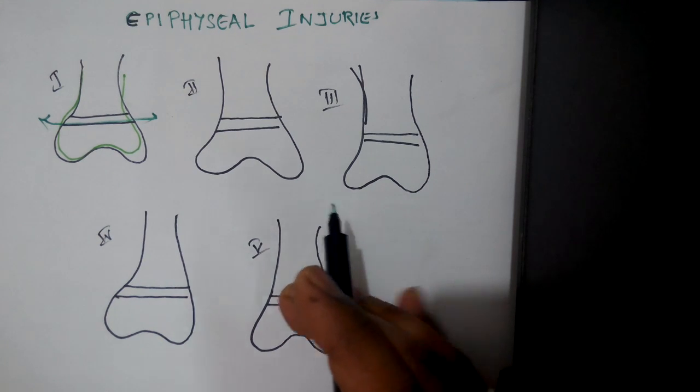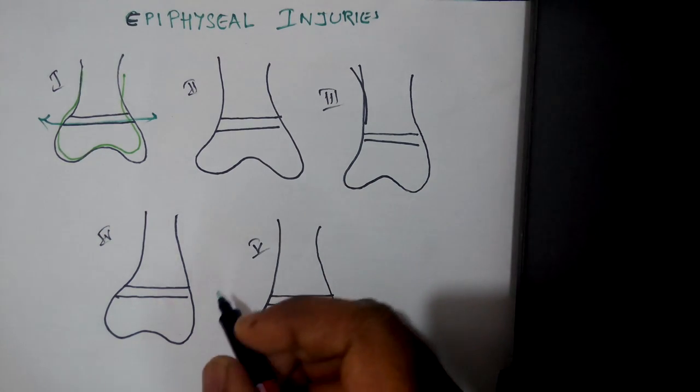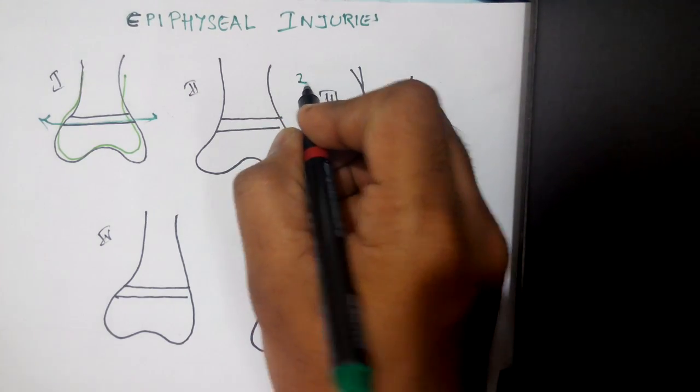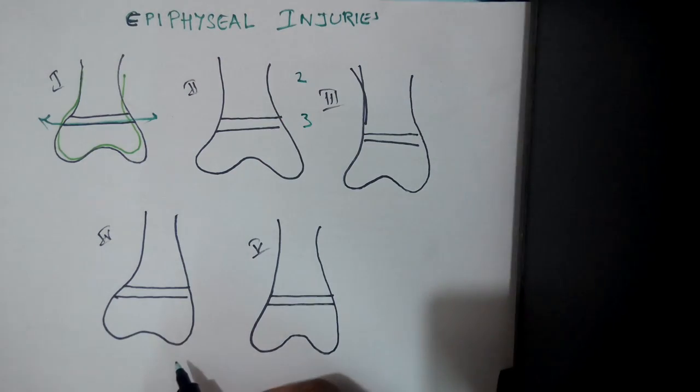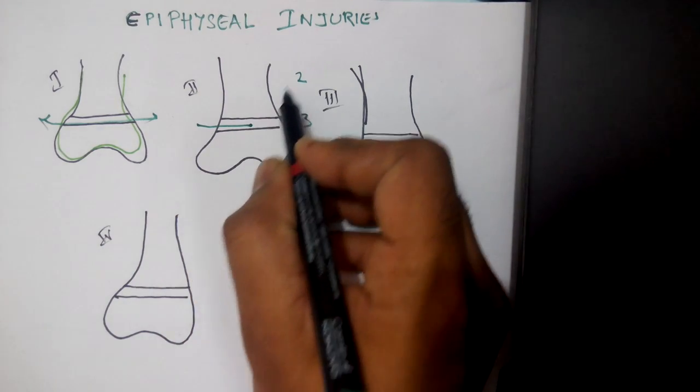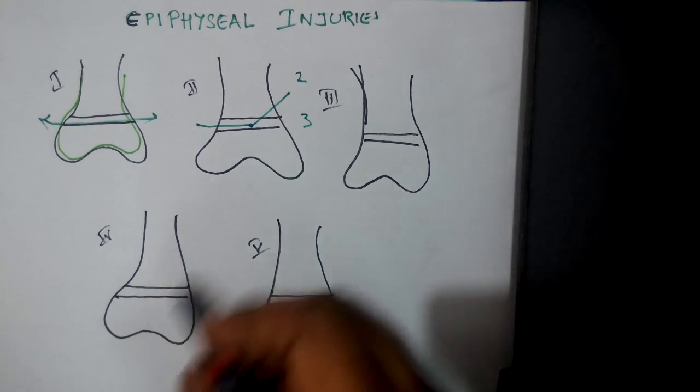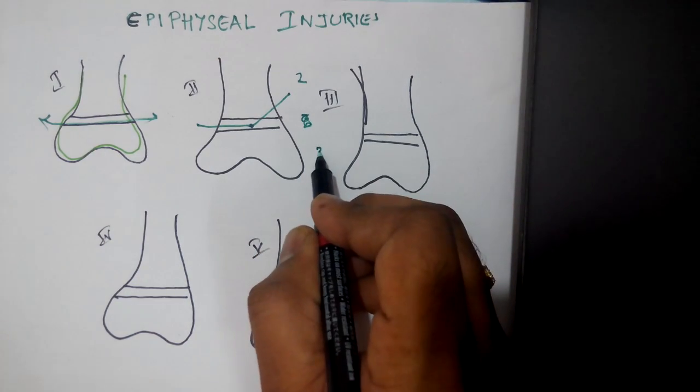Number 2 and 3, how to remember this? When we write numerics from 1 to 10, we usually write 2 like this and 3. The fracture line is basically through the physis. If it is going above towards 2, this is Salter-Harris 2.